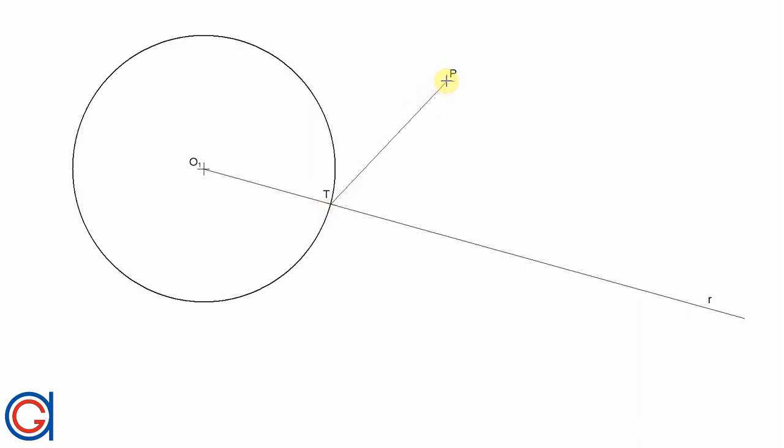So to continue, we are going to join tangent point T with given point P. And now we are going to work out the perpendicular bisector of this line segment TP.